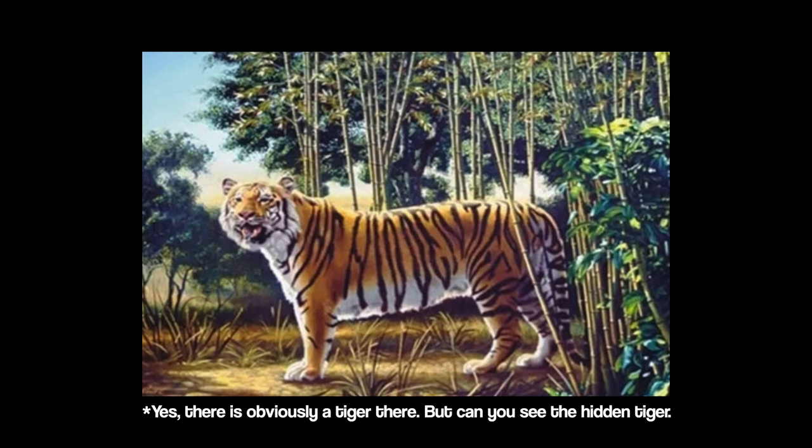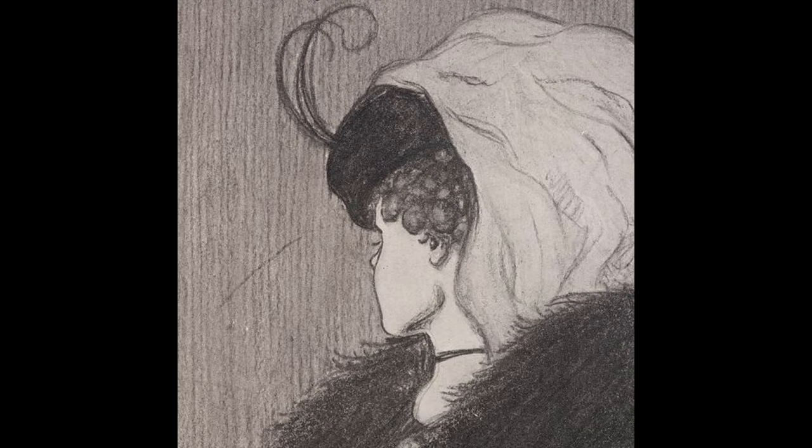Here's a perception test. Are you ready? First, can you see the hidden tiger? Second, who do you see here? Third, squares or circles? And lastly, read this sentence.